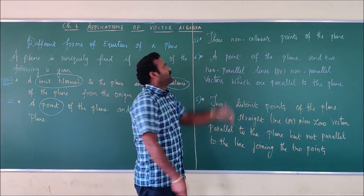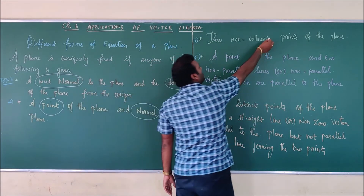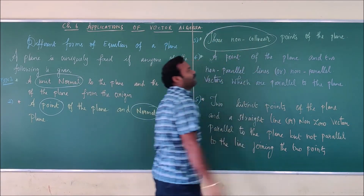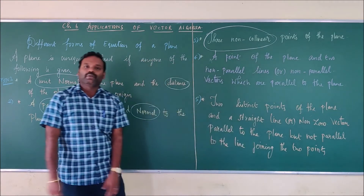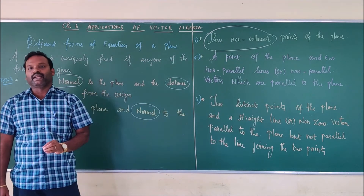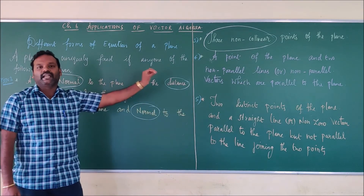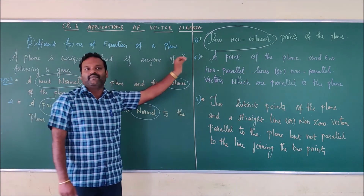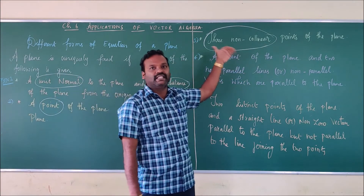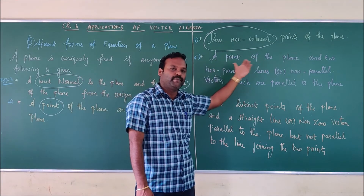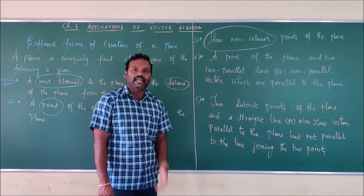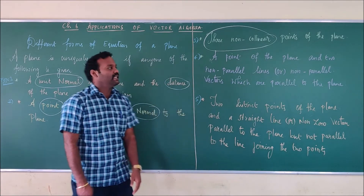Third type — this is very very important. You will be given three non-collinear points. If you are given three non-collinear points, we have to write the equation in three forms: that is parametric vector equation, non-parametric vector equation, and the Cartesian equation.